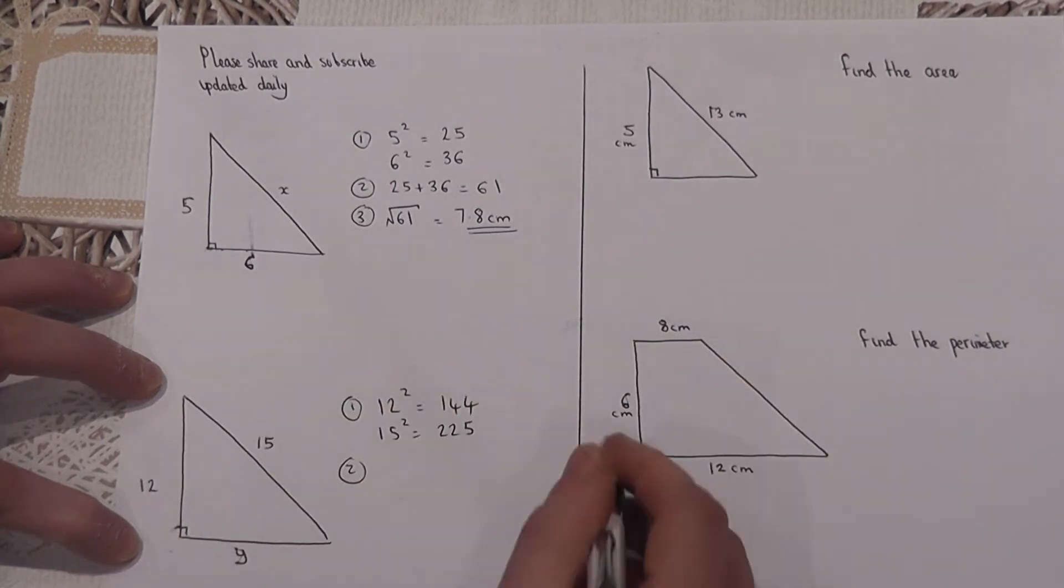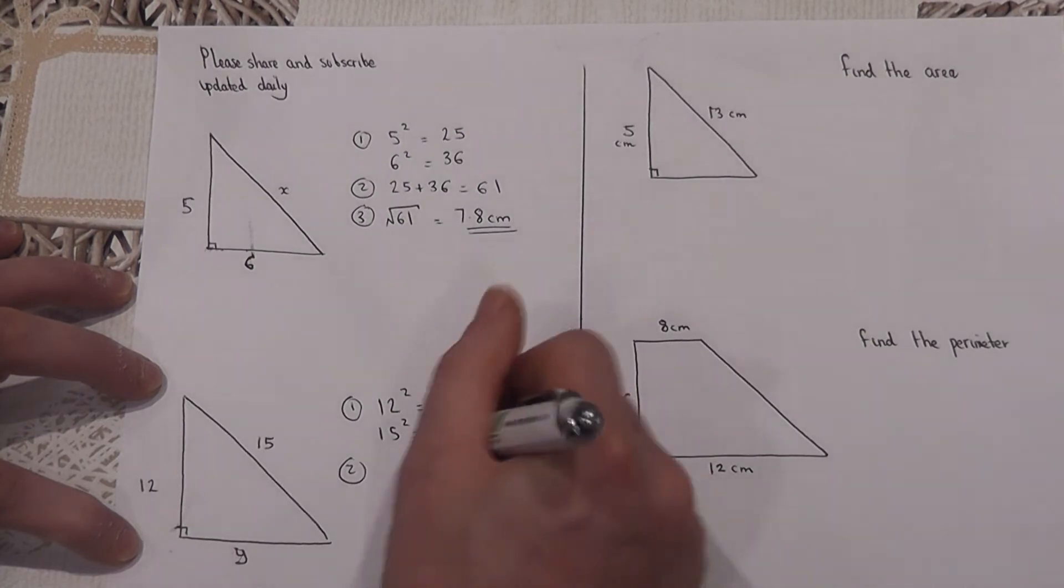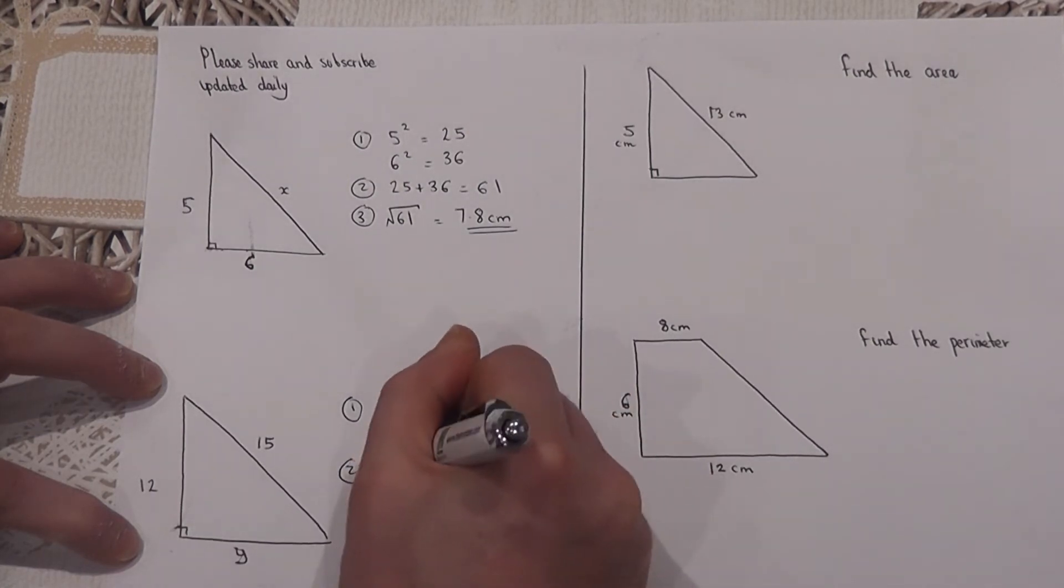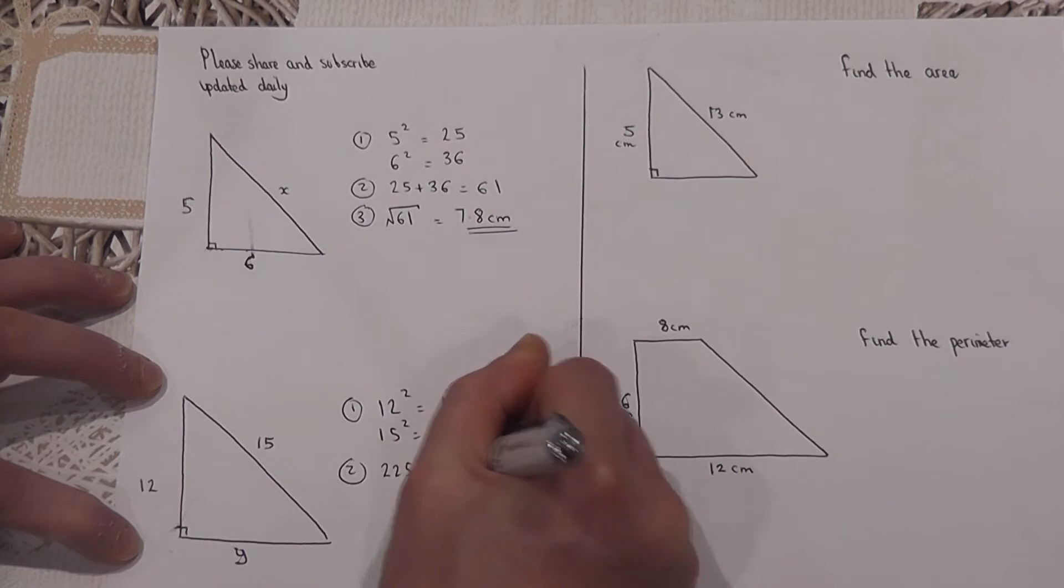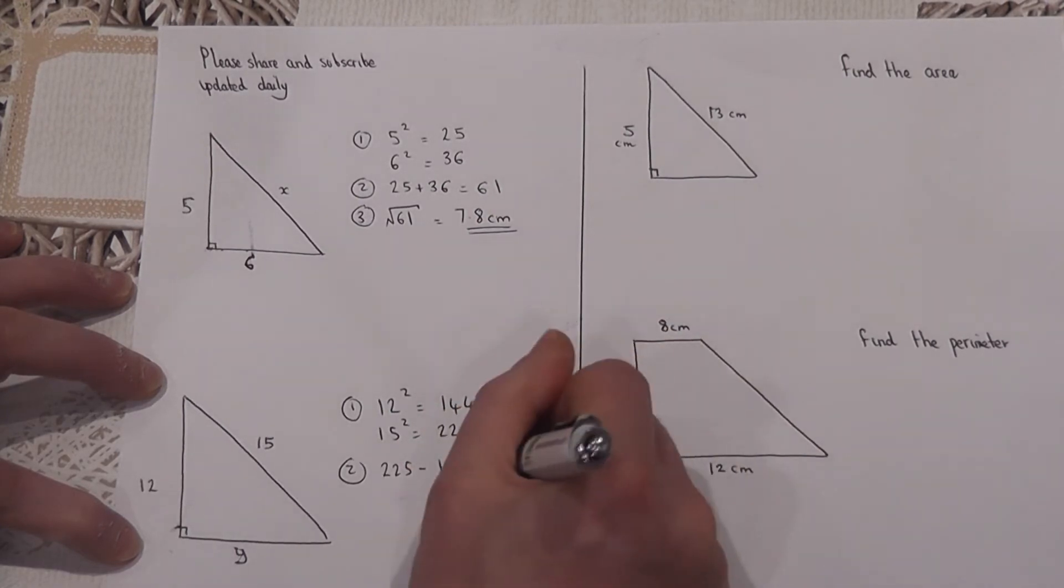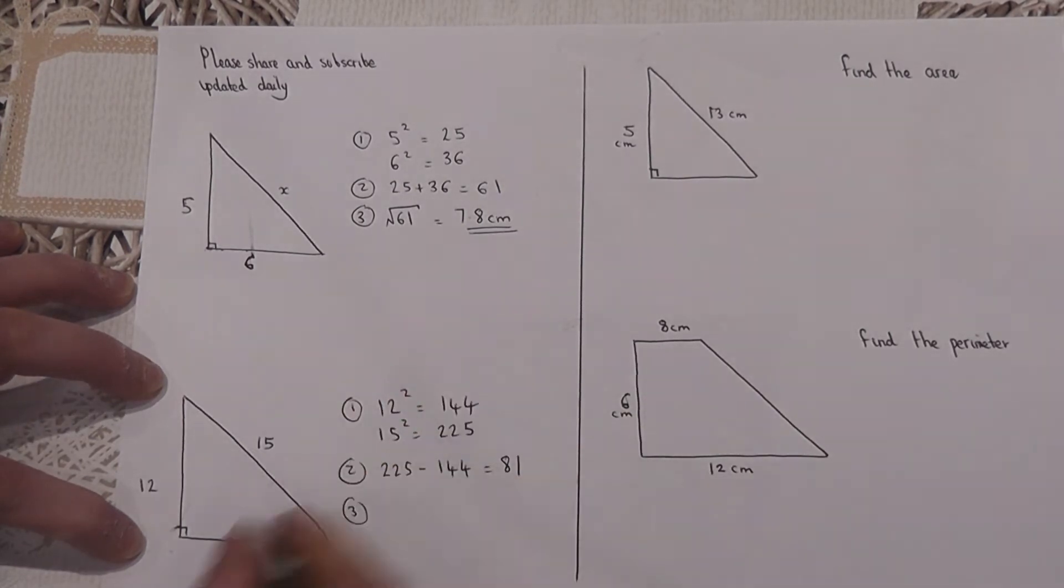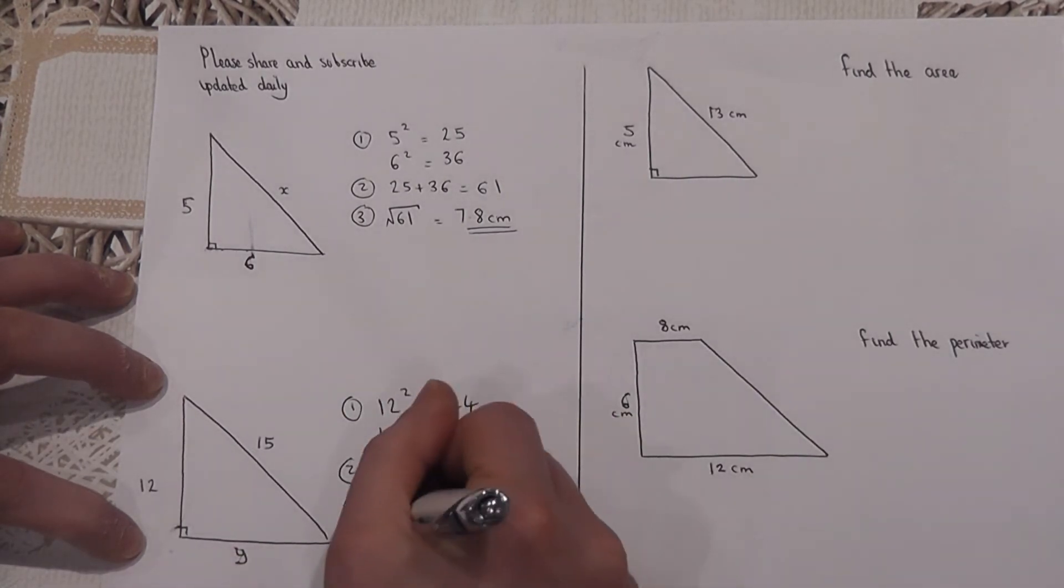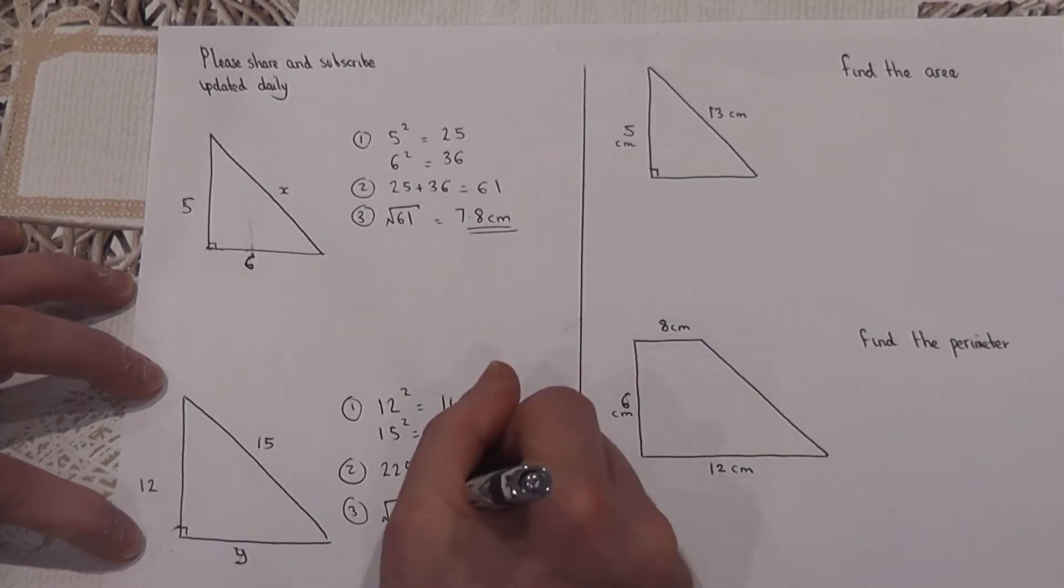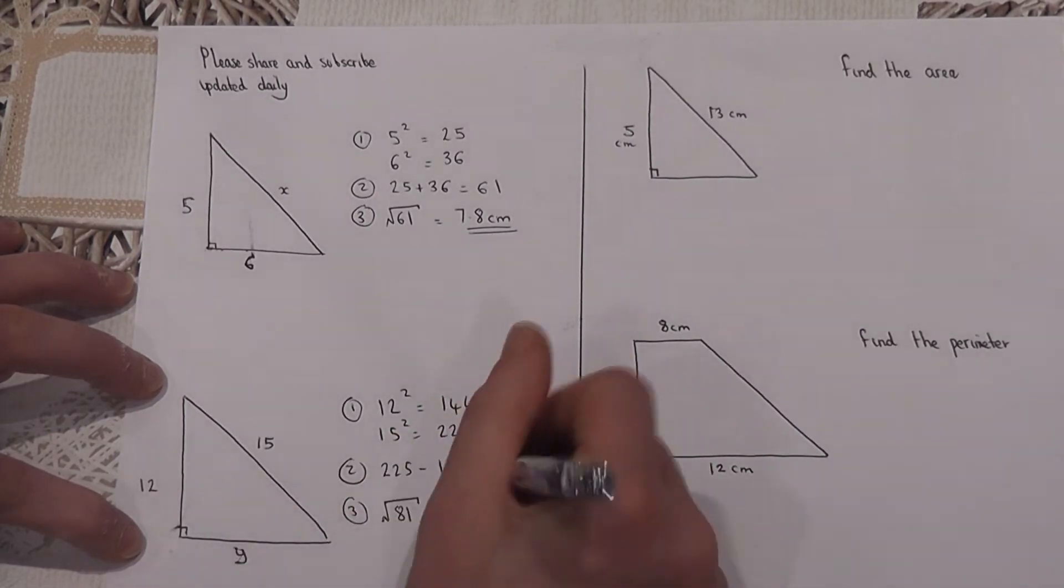However, if we know what the hypotenuse is, we subtract rather than add. So 225 take away 144 equals 81. Then to find out the actual length of y, we find the square root of 81, which we know is 9. So the side y is 9.